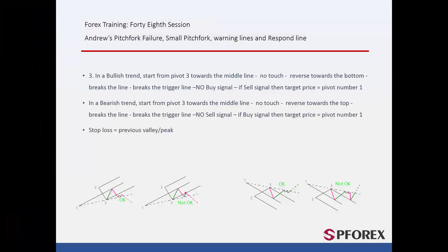The third failure format is formed when a price oscillates between the third and first pivot lines, followed by a movement towards the trigger line. In a bullish trend, if a price does not cross the trigger line and returns towards the top and touches the third pivot line, even if eventually price crosses the trigger line towards the bottom, a sell signal will not be valid or reliable. In a bearish format, if a price does not pass the trigger line and returns towards the bottom and touches the third pivot line, though price passes the trigger line towards the top, a buy signal will not be true or credible.